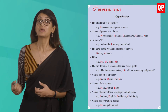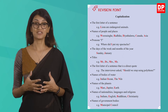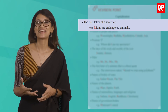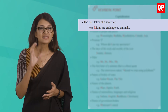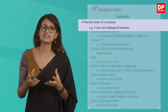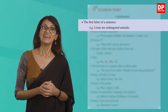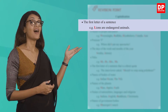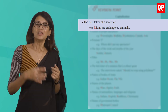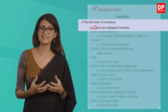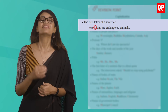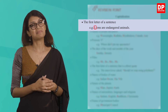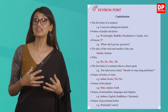Turn to Unit 4, Revision Point, page 46 in your pupils' book. According to the blue box given, we are informed that capitalization should take place at the first letter of every sentence. That is a fact — when you start a fresh sentence, you must start it with a capital letter. Look at the example they have given: 'Lions are endangered animals.' The first letter of the sentence is a capital letter.